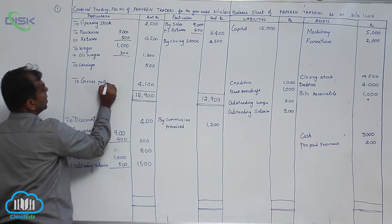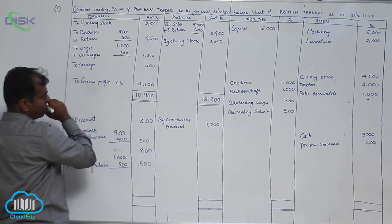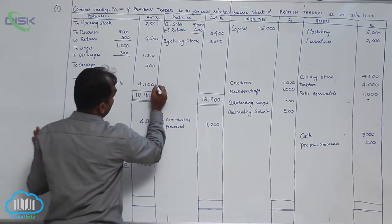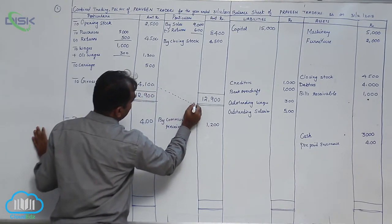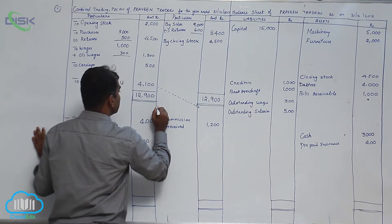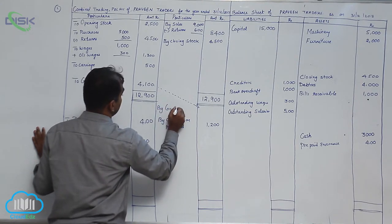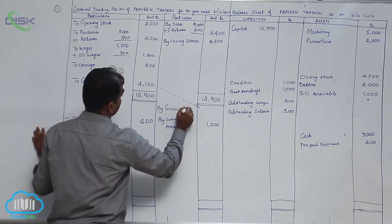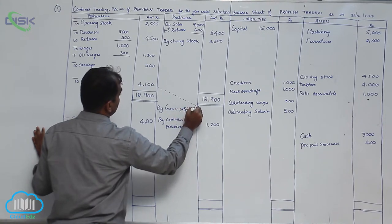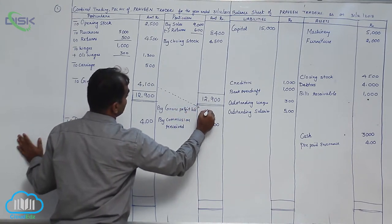The same will be reflected on the credit side of P&L by gross profit brought down. So the amount being $4,100.